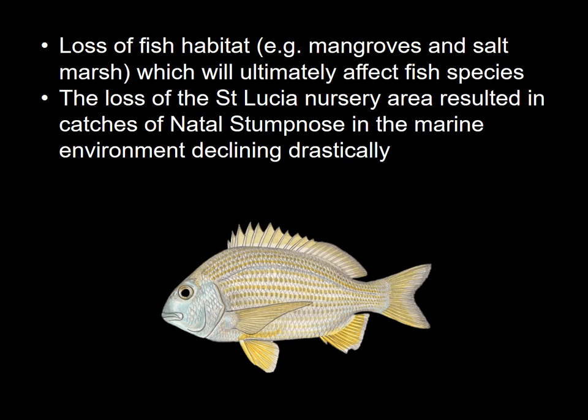The loss of the St Lucia nursery area — not from high sea events but from drought — resulted in catches of Natal Stumpnose, which is an estuarine-dependent marine species, declining drastically in the marine environment. This is because there were no longer nursery areas available for the species.